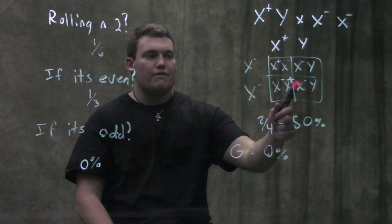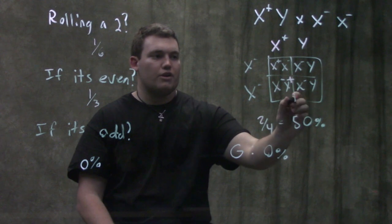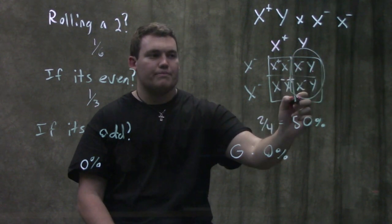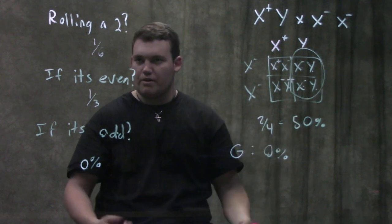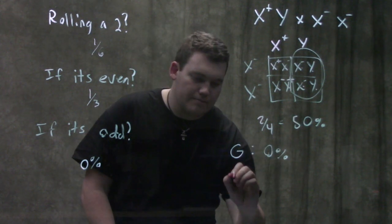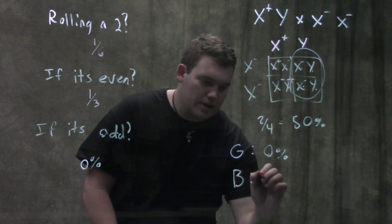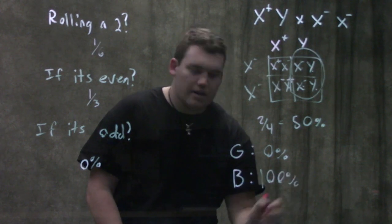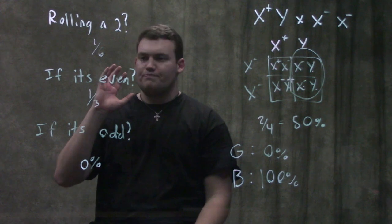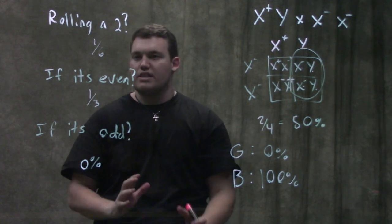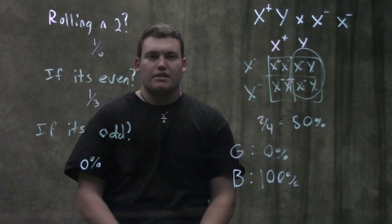What about if it's a boy? If it's a boy, we only look at the boy section: X-minus Y — colorblind — and X-minus Y — colorblind, for the reasons we talked about earlier. So if it's a boy, there's a one hundred percent chance it's going to be colorblind. You can see how we went from fifty percent overall to these conditional results, just like the dice example.